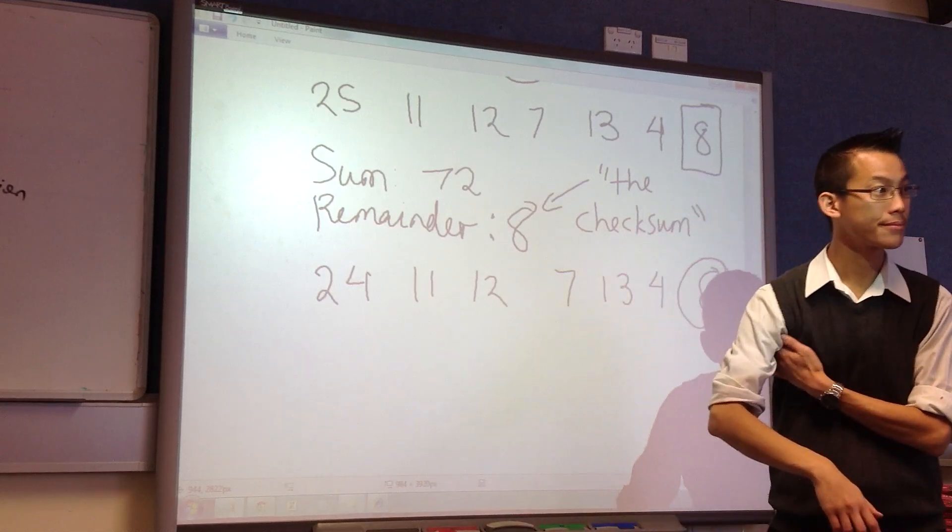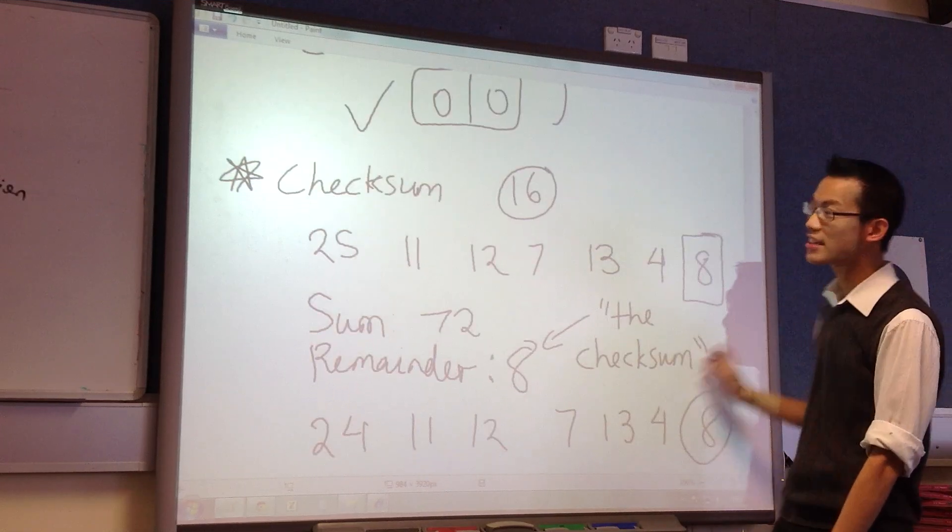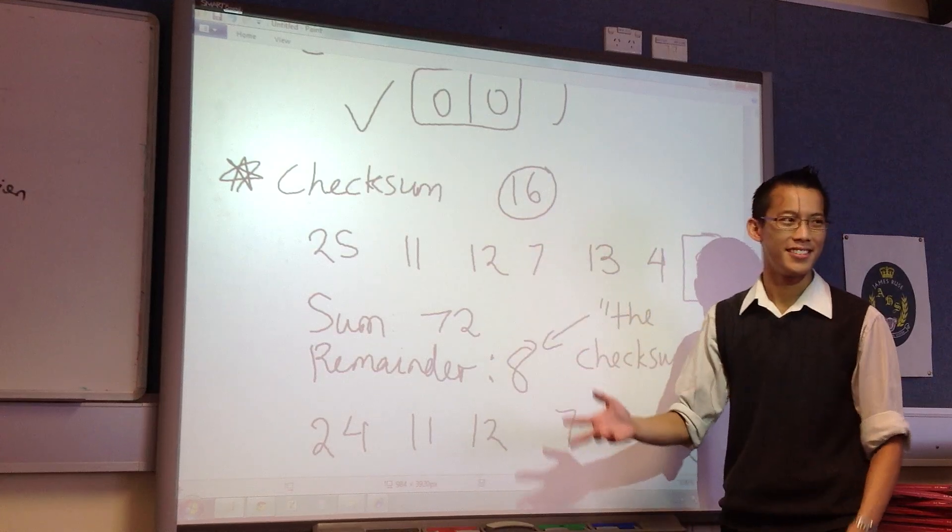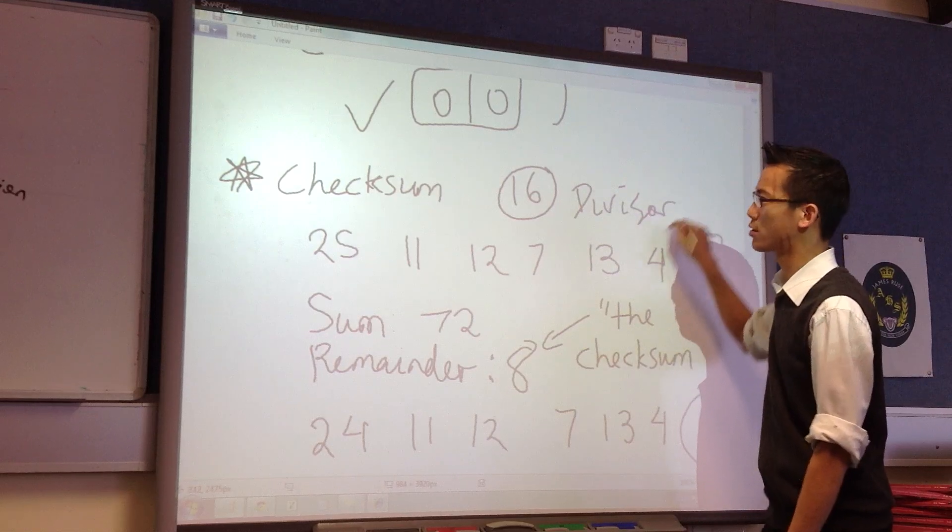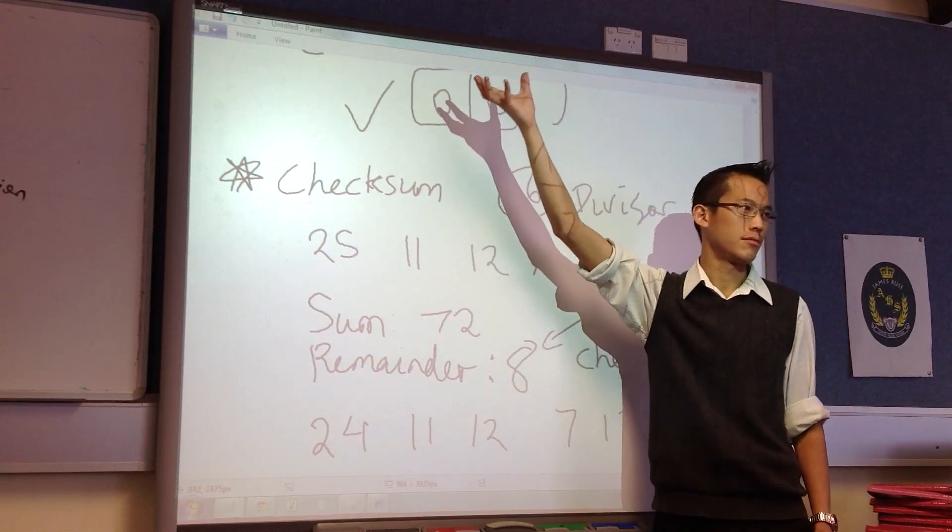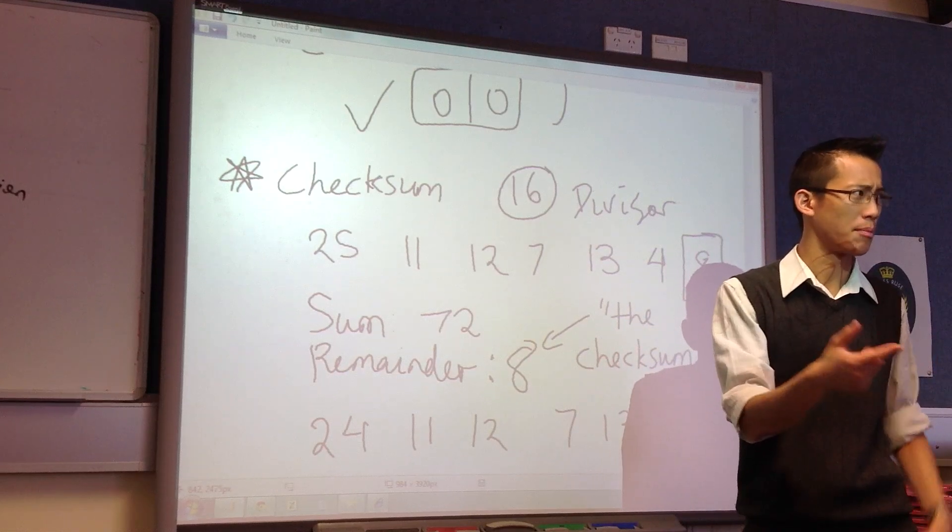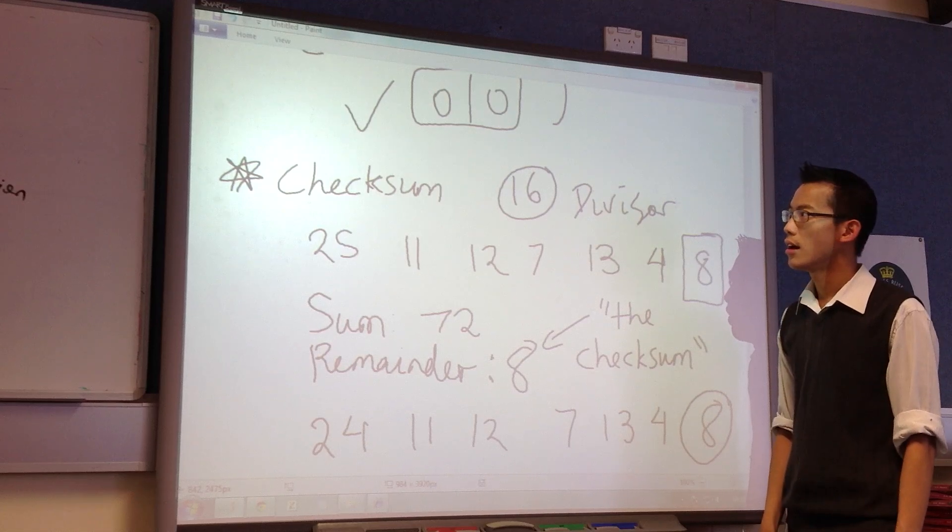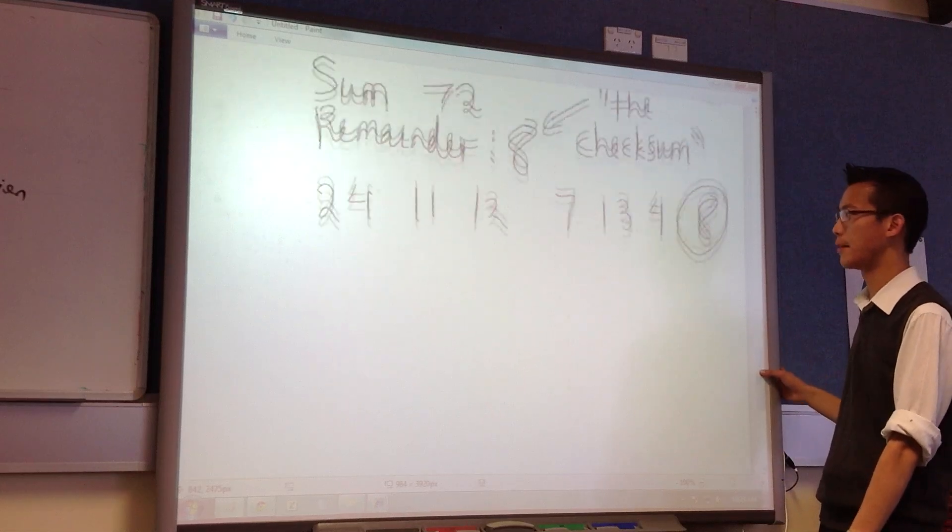Question - so what would you call the 16? It's got different names, unfortunately. You'd call it the thing you divide by, it's a divisor. So the parity bit works on counting. The checksum works on addition and division. That's the mathematical principle in which it works. There's going to be a different kind of divisor for the next kind of check, as you'll see in a second.